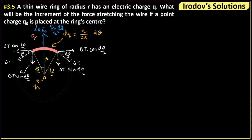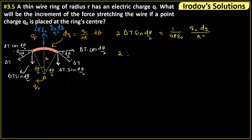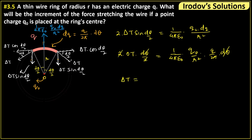The cosine components cancel, and the two sine components together balance the electrostatic force. So: 2·δt·sin(dθ/2) = (1/4πε₀)·q₀·dq / r². For a very small angle, sin(dθ/2) ≈ dθ/2. Substituting and replacing dq = Q·dθ/(2π), the equation becomes: 2·δt·(dθ/2) = (1/4πε₀)·q₀·Q·dθ / (2π·r²). The dθ terms cancel, as do the factors of 2.